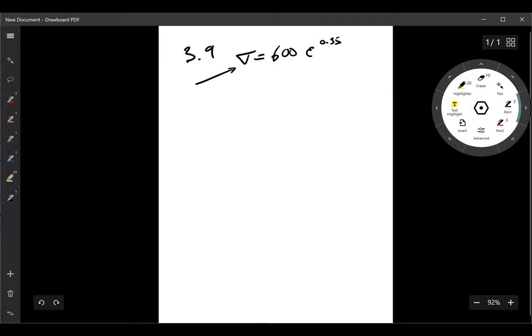And you're told this is in units of megapascal. So this is the Holloman equation. That's equation 3.10 from page 166 of the textbook.